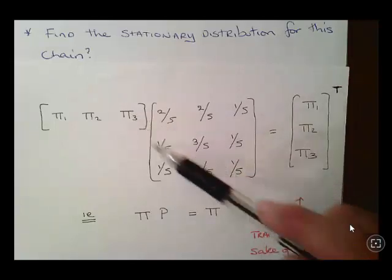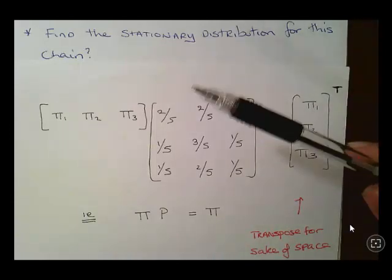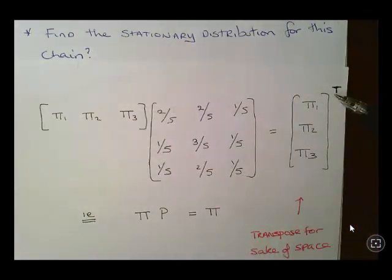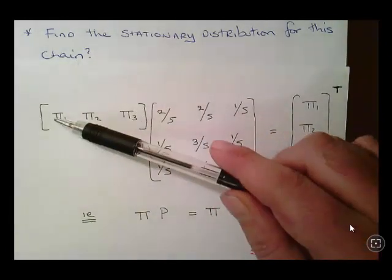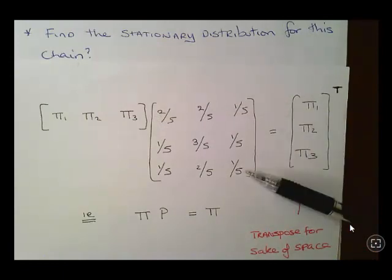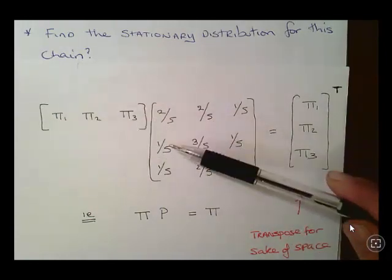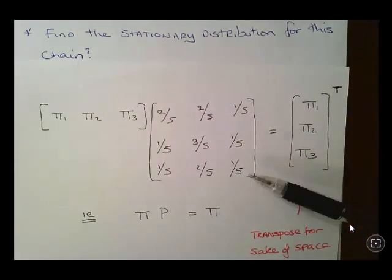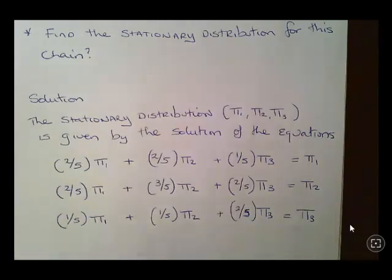So I wrote it out like that. Now just as a remark, just for the sake of space, I actually wrote this out as its transpose. But actually it should be a row vector just like this. That's just to overcome a little challenge, to make it legible. So essentially what I'm going to do is multiply out these equations here. Matrix multiplication, essentially. So multiply this row by that column, this row by that column, and this row by that column. So essentially π1 times 2/5, plus π2 times 1/5, plus π3 times 1/5, and that should actually equal to π1.